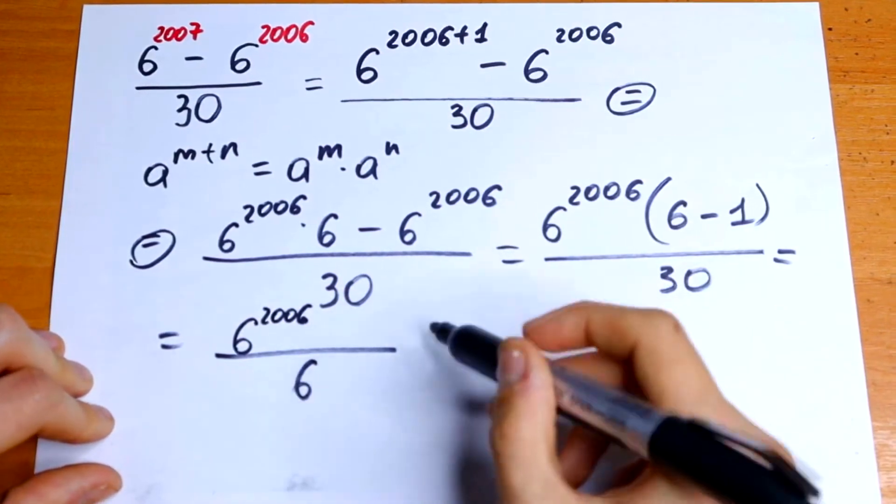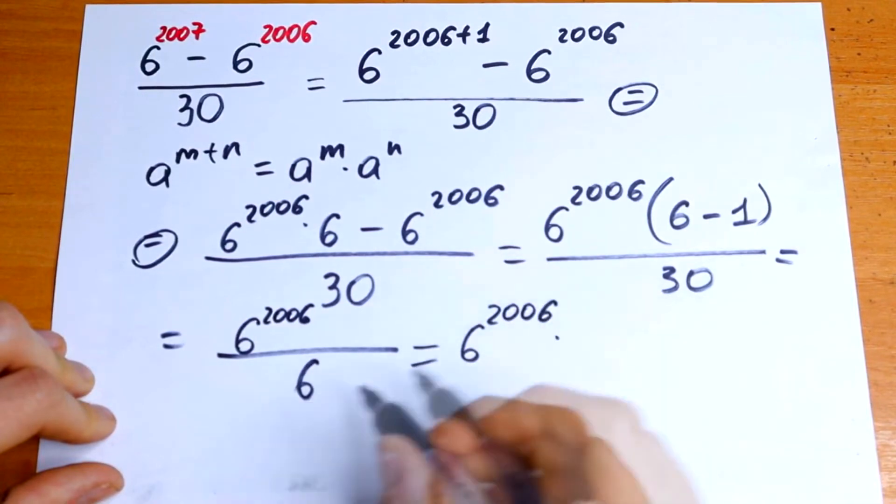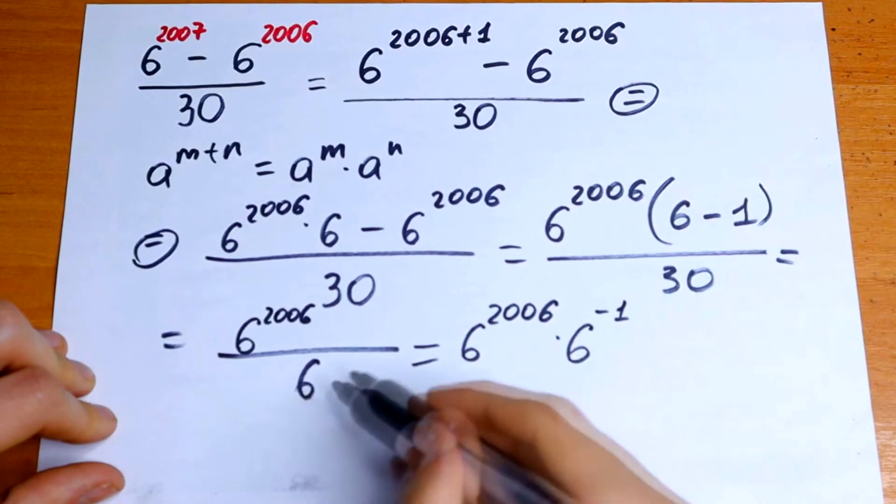Really good case right now because we can simplify this a little bit. 6 to the 2006 power times 6 to the minus 1 power because we bring this 6 from denominator to numerator so we need to put minus right here.